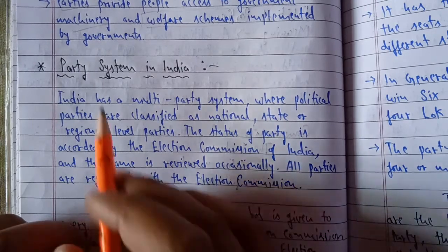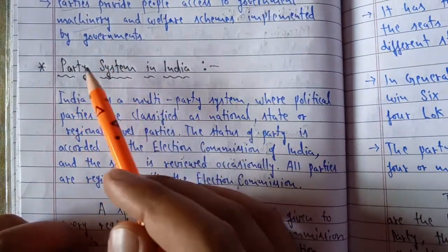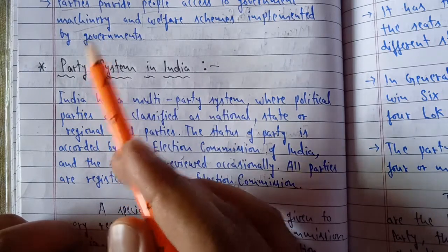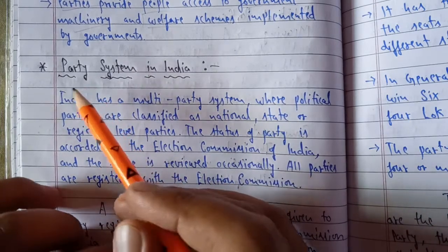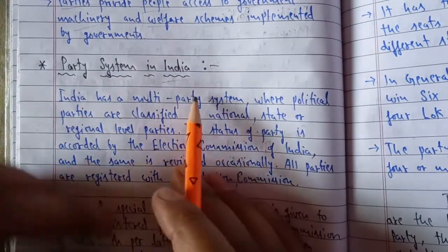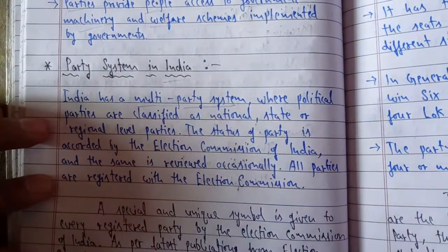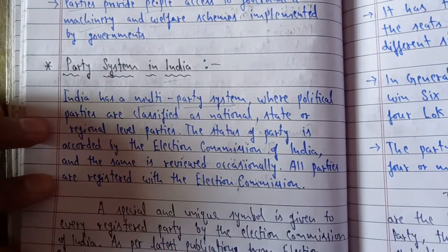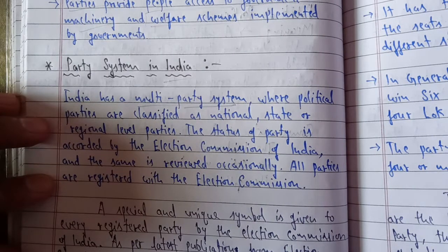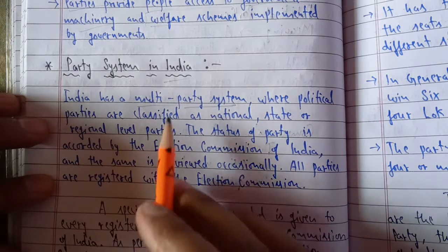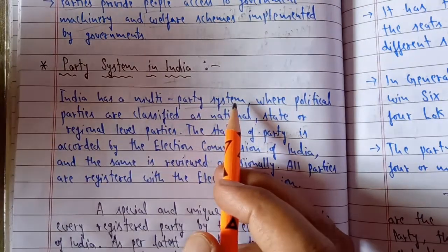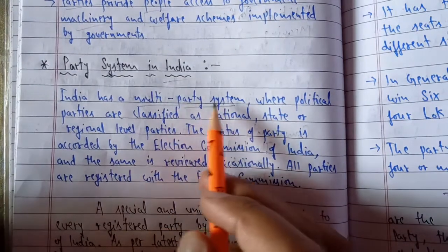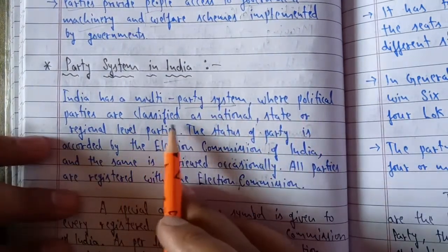Now the next topic is Party System in India. Having understood the meaning and functions of parties, let's see what the party system in India looks like. India has a multi-party system. Given the enormous diversity — different opinions, social backgrounds, castes, languages, and religions — it is obvious that India would have a multi-party system.